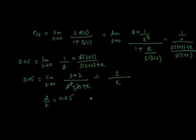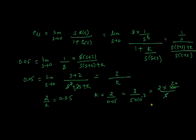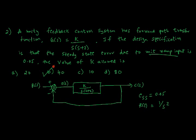So k = 2/0.05 = 2 × 100/5 = 40. The right answer is option B. This was a two-mark question — everything is straightforward once you know the formula. If you have any doubts about how to calculate steady state error, use the comment section and we'll make another video for tough questions. Thanks for watching!